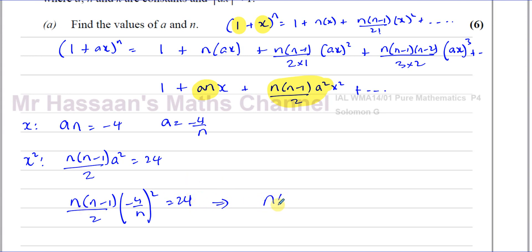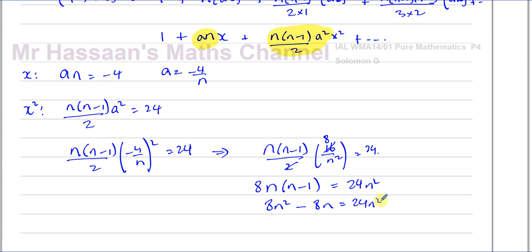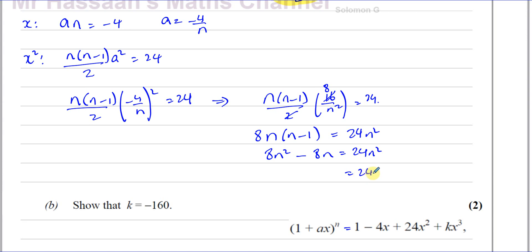That gives us n(n−1)/2 · 16/n² = 24. Simplifying, n(n−1) · 16 cancels with the 2 to give 8, so 8n(n−1) = 24n². Expanding: 8n² − 8n = 24n².